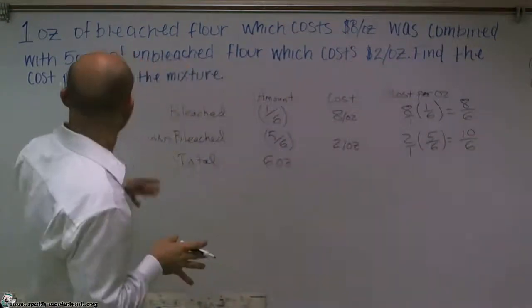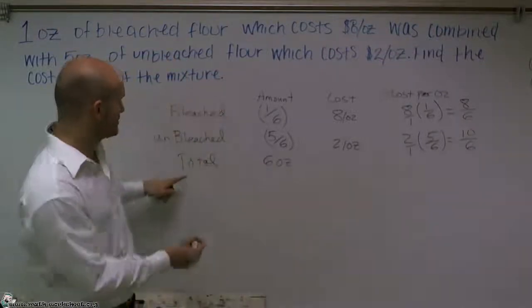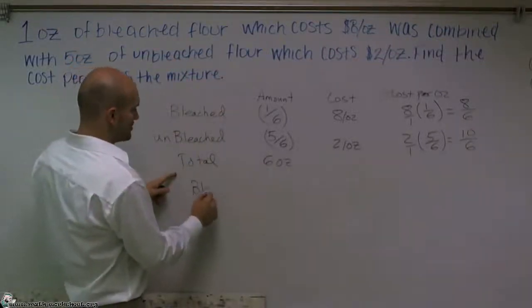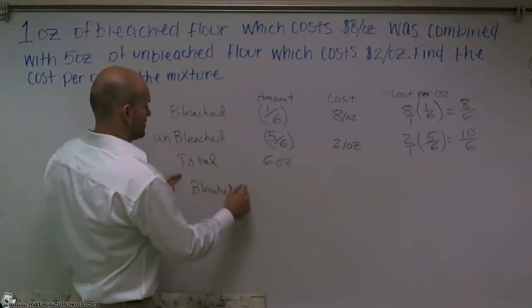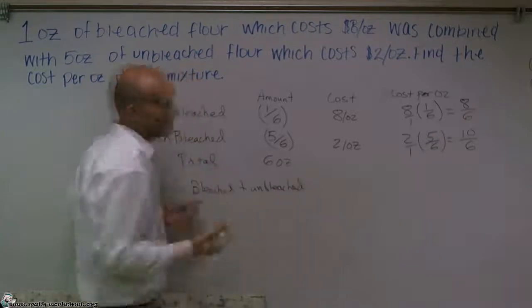Well it says it wants us to find the cost per ounce of the mixture. So that means, remember, both of these added up, your bleached plus your unbleached. So we need to combine these.